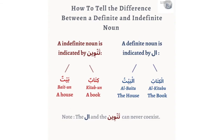How do you tell the difference between a definite and an indefinite noun? A definite noun is indicated by al usually, while an indefinite noun is indicated by tanwin. So we have kitabun, baytun — 'a book,' 'a house.' But when I add al, which means 'the,' it becomes al-baytu, al-kitabu — 'the house,' 'the book,' referring to something specific.